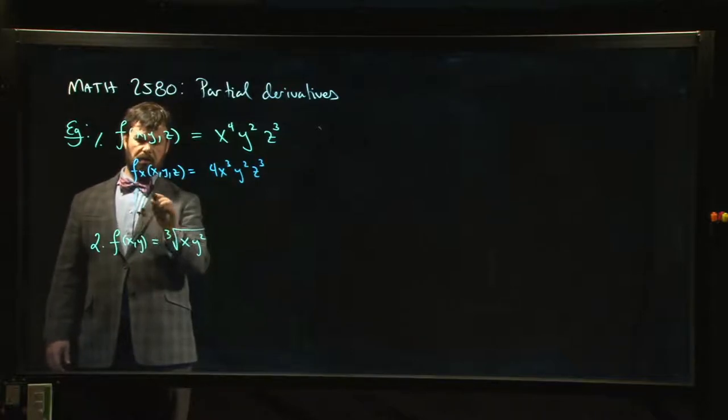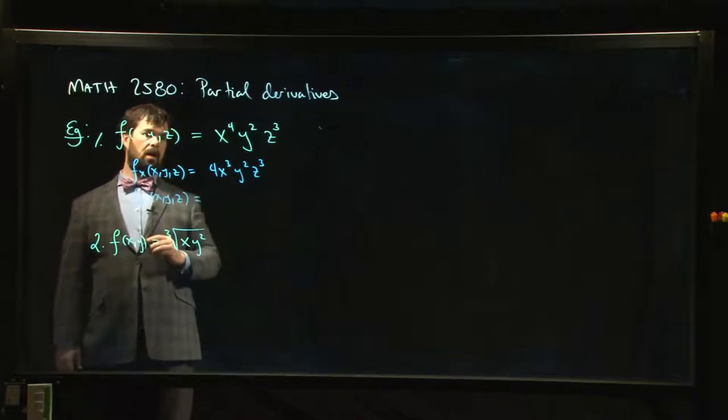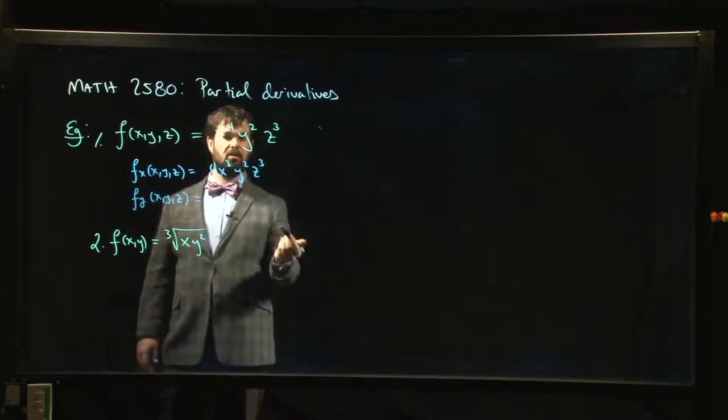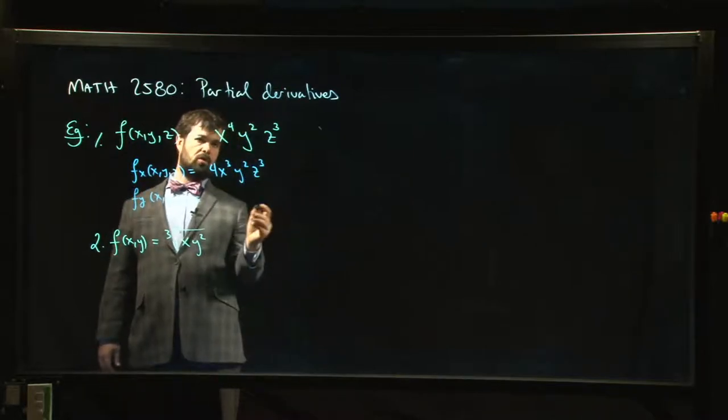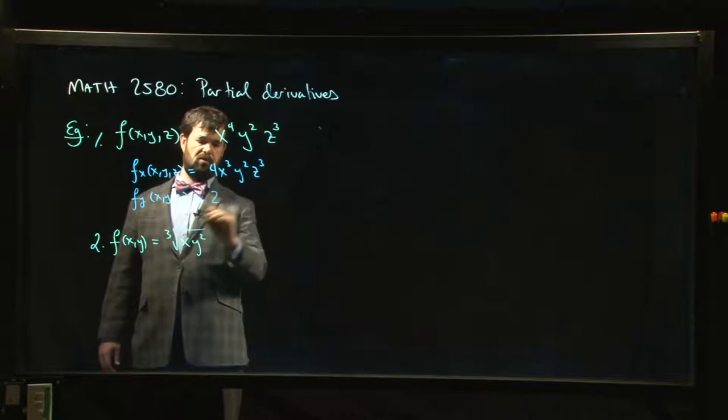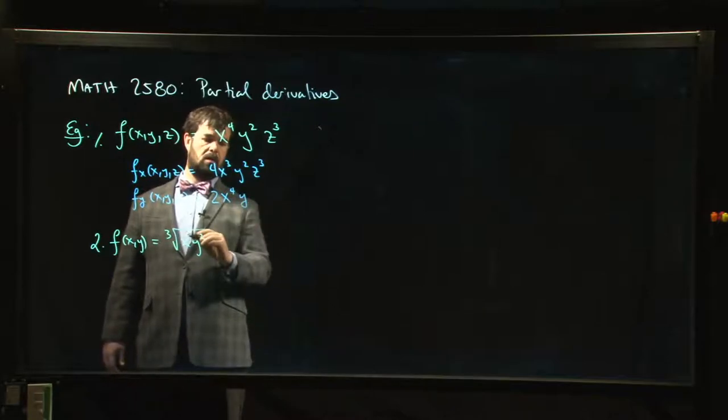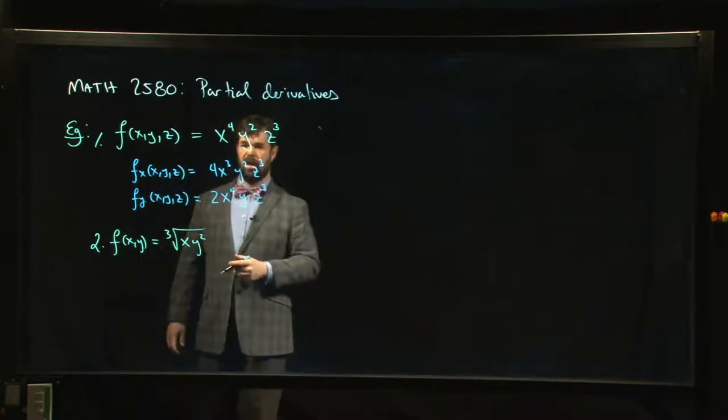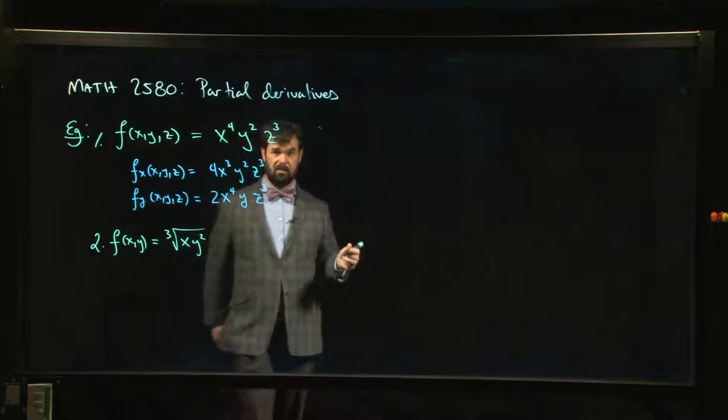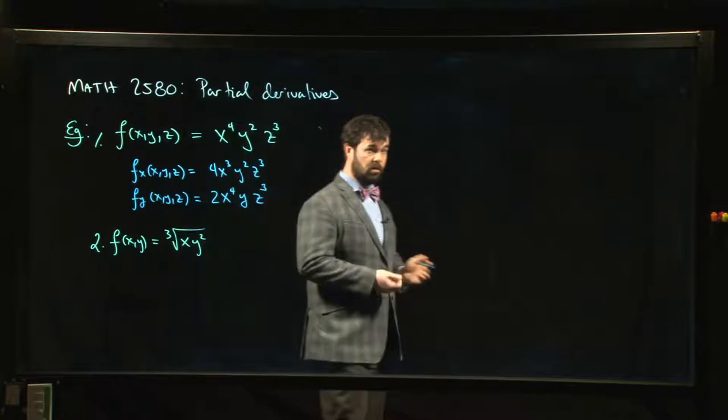If I wanted to do the y derivative, again, I'm treating x and z as constants, so I'm just taking the derivative of y squared. We know that the derivative of y squared is 2y, and it's usually nice to put the coefficient out front, so x to the four stays put. y squared becomes y - 2 times y times z cubed. And I'll leave the z derivative for you, but I bet you can figure it out. You just treat x and y as constants, you take the derivative of z cubed using the power rule.